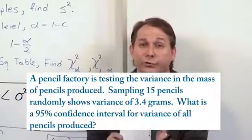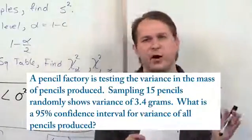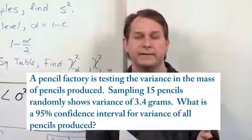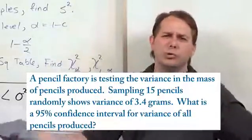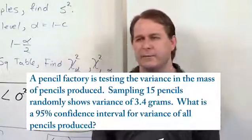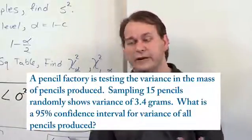If we have a very low variance, then that means the factory is producing pencils with very tight tolerance, very similar masses. But if we get a variance that's huge, then we're not going to be having a very happy day because we're going to have a factory that's producing pencils of all different masses.